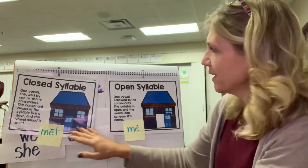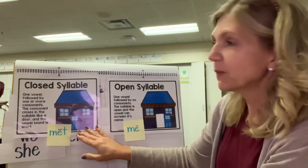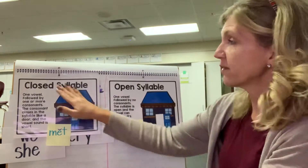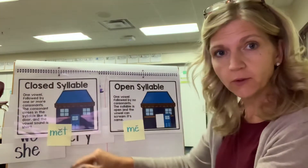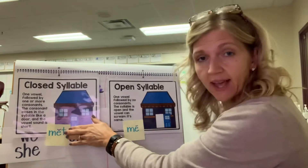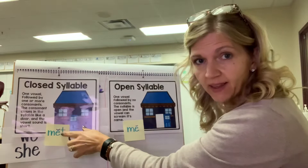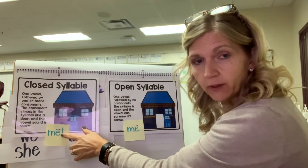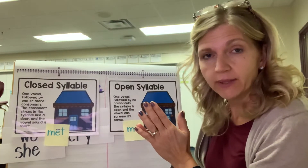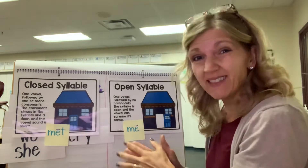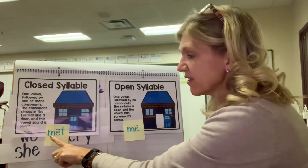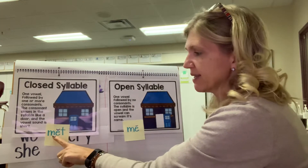We are still working with those open syllables. We've talked about closed syllables where there's a consonant that comes after the vowel and it closes off the sound that that vowel can make, so it only can make its short sound. Our CVC pattern is consonant, vowel, consonant.